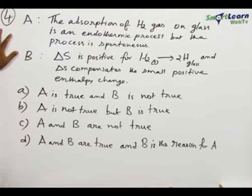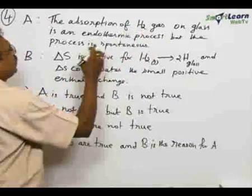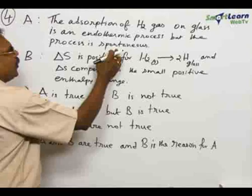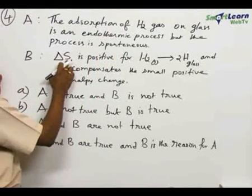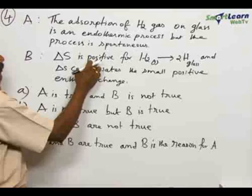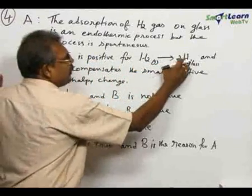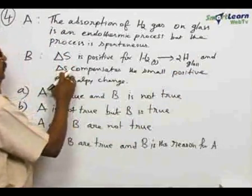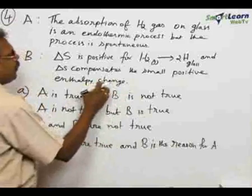Number 4. Two statements are given here. Statement A: the adsorption of hydrogen gas on glass is an endothermic process, but the process is spontaneous. Statement B: entropy change, that is delta S, is positive for the reaction hydrogen gas giving two hydrogen atoms on glass, and delta S compensates the small positive enthalpy change.